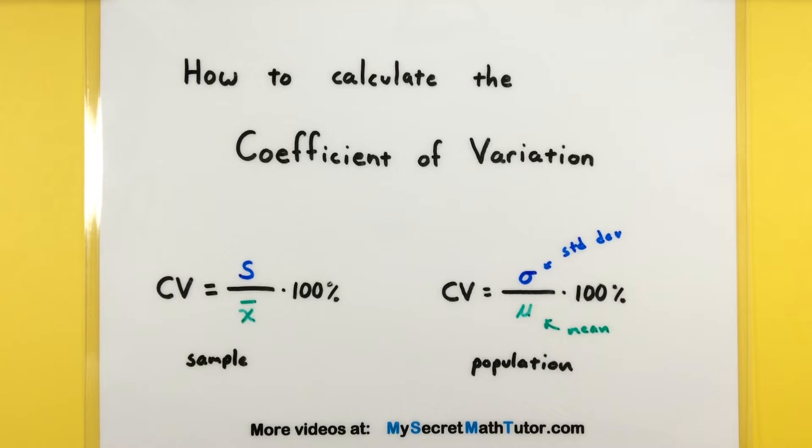Now, this value is really handy for comparing the variation of two different groups if they have a different mean, or if they're using completely different scales. Let's jump into an example and see exactly how this works and how easy it is to get a coefficient of variation.